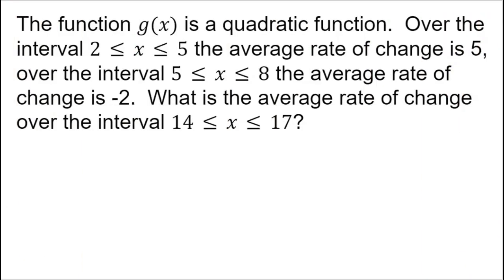In this first problem, you're told that the function g(x) is a quadratic function. Over the interval 2 to 5, the average rate of change is 5. Over the interval 5 to 8, the average rate of change is negative 2. What is the average rate of change over the interval 14 to 17?